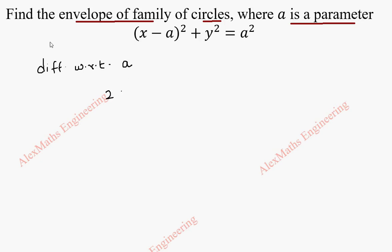So now, this will be 2 times (x - a). The derivative of x minus a is minus 1 because x is a constant, so that is 0. Minus a is minus 1. y² is constant and a² will be 2a.